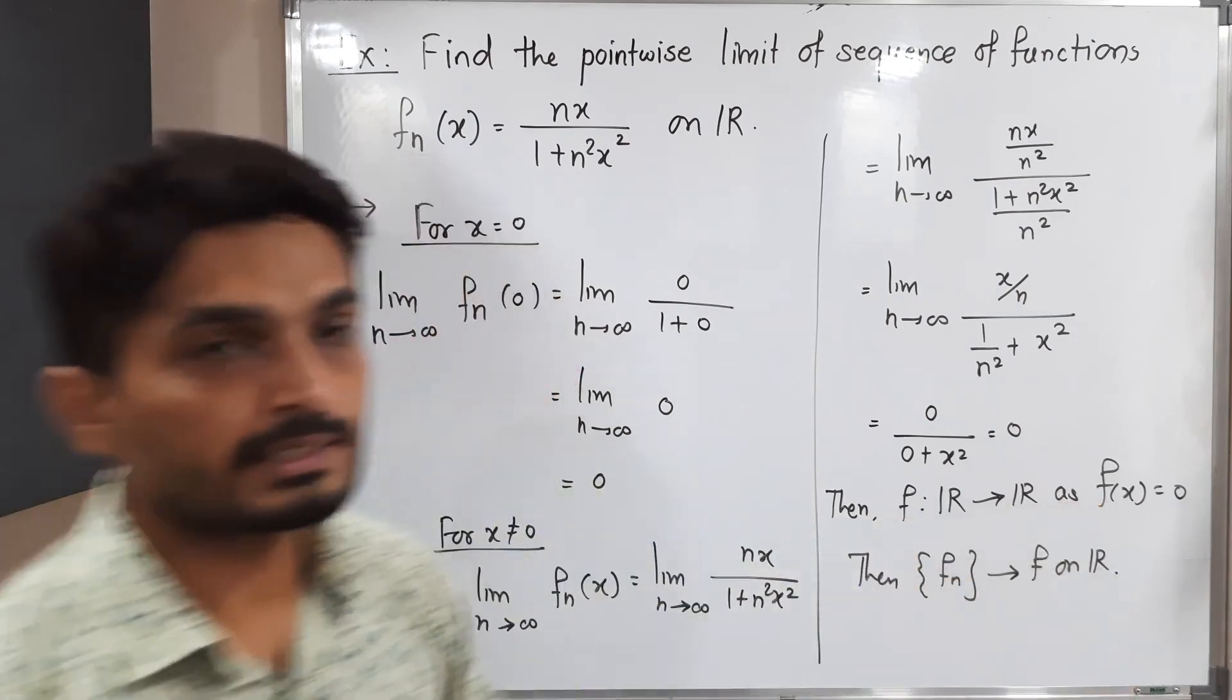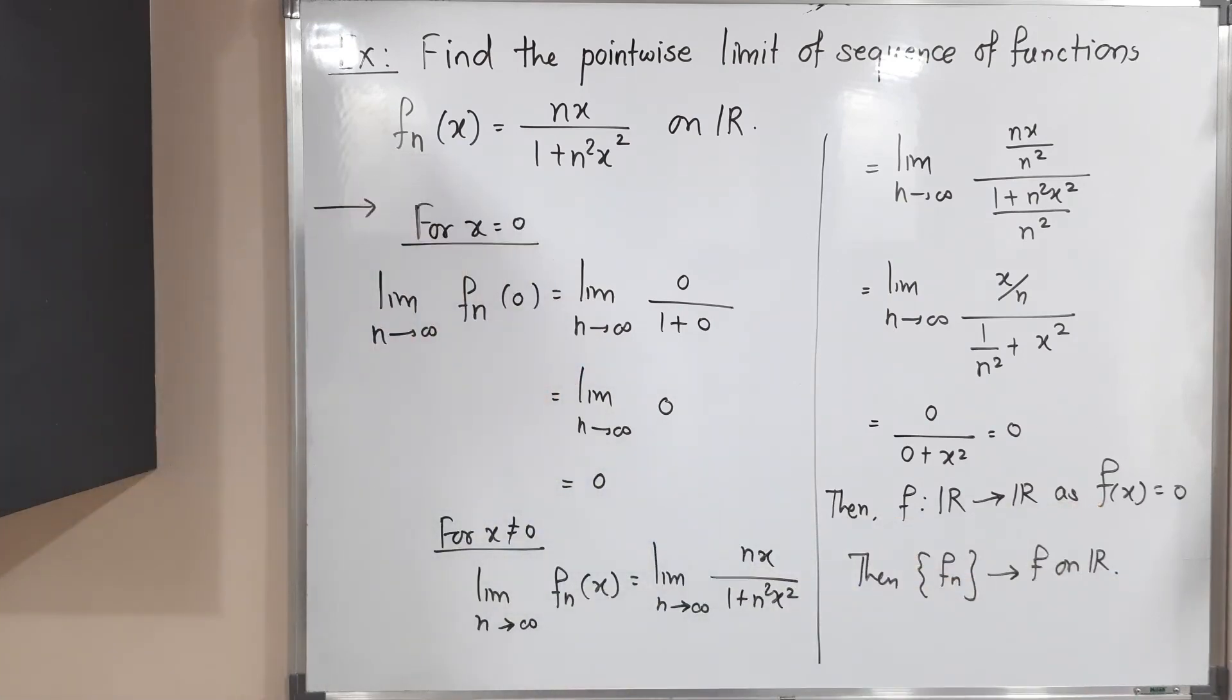So this zero is the pointwise limit of the given sequence of functions. Make a screenshot of it, then we will stop. Thank you, bye bye.